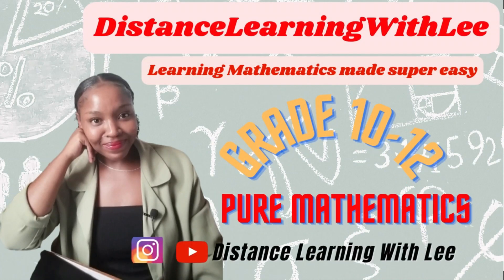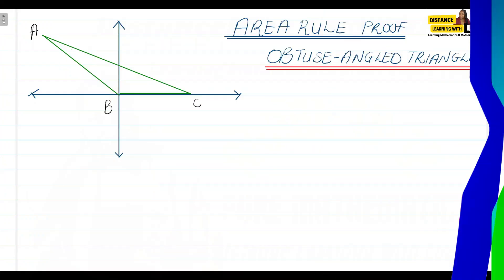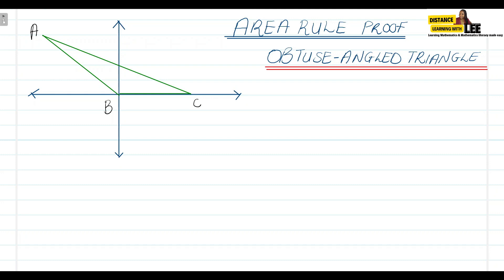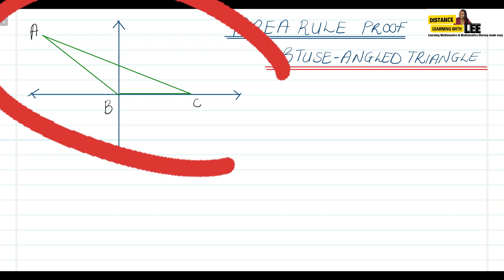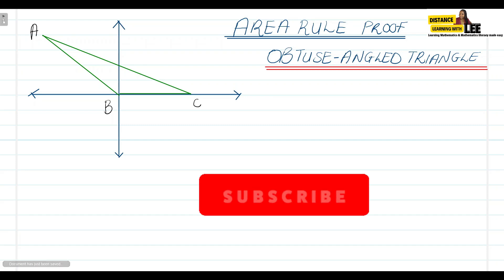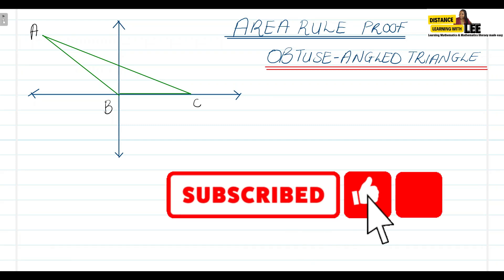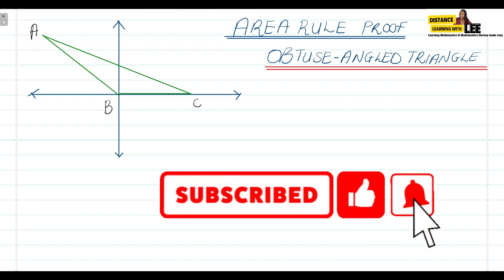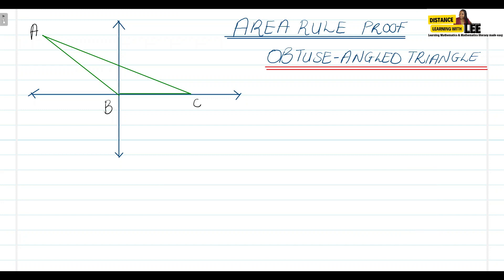Hey mathematics learners, welcome to Distance Learning with Lee, where I make learning mathematics super easy. On today's video tutorial, we are going to be going through the area rule proof when you are basically given an obtuse angle triangle. Before we get started with this proof, please make sure that you are subscribed to the channel and click on that notification bell so that you get notified every single time I upload a video tutorial.